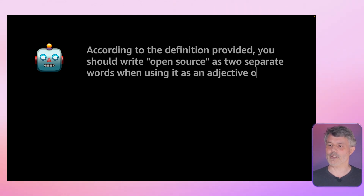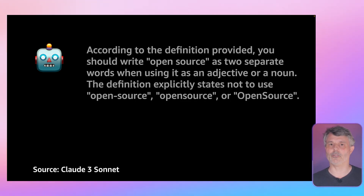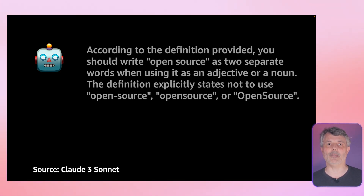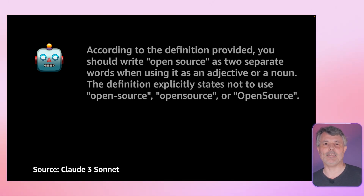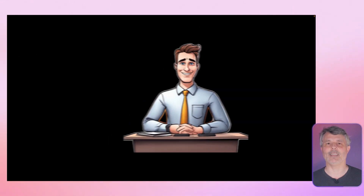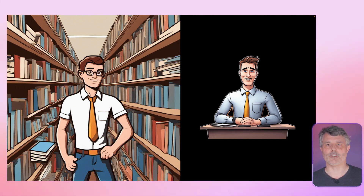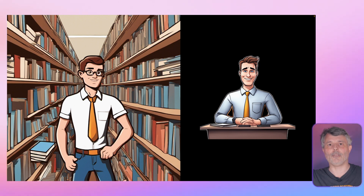The answer is really good, as expected: 'According to the definition provided, you should write open source as two separate words.' So the ability to get a precise answer depends on my ability to write relevant extracts or references in my prompt. Let's leverage this capability and extend it — augmenting the prompt with more context. This technique is what we call retrieval augmented generation, or RAG. The context is provided by our private documents.